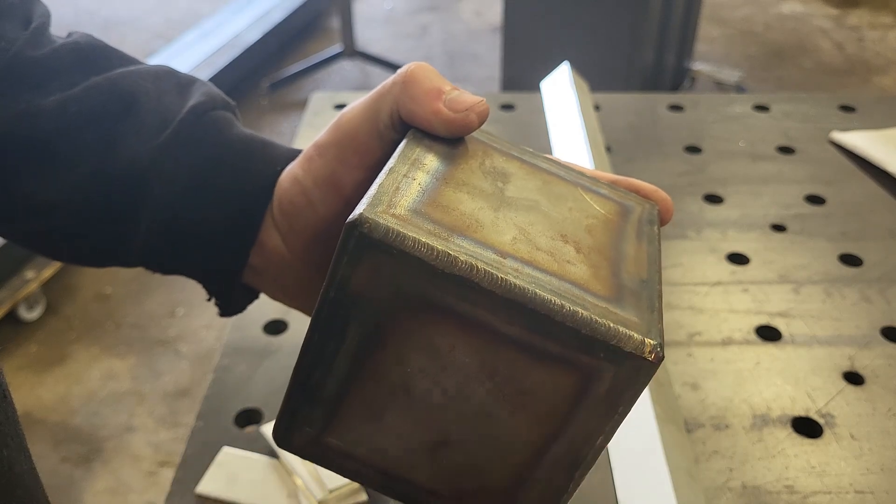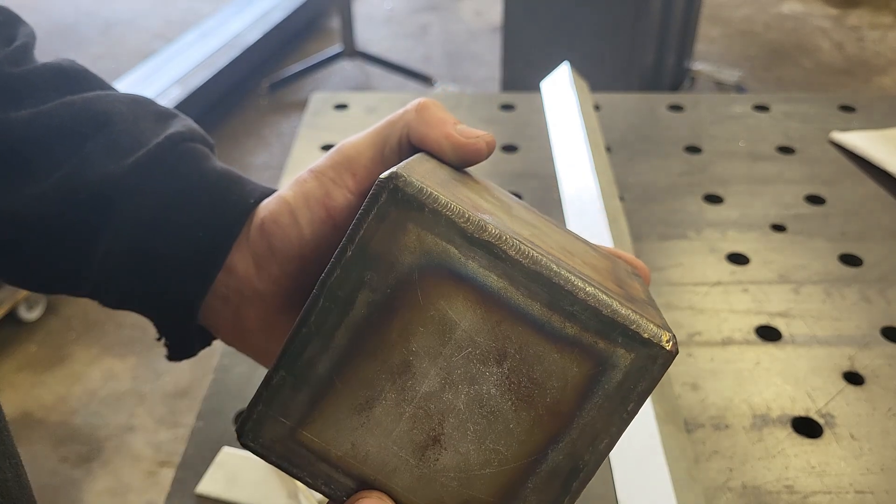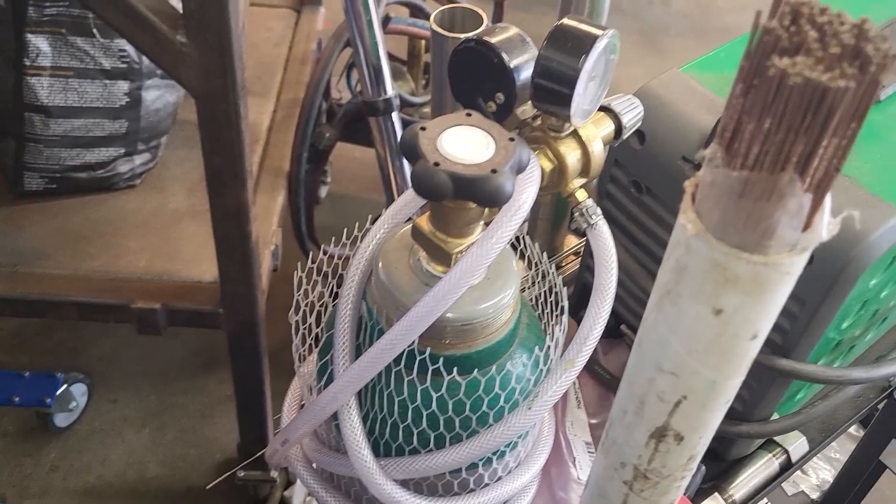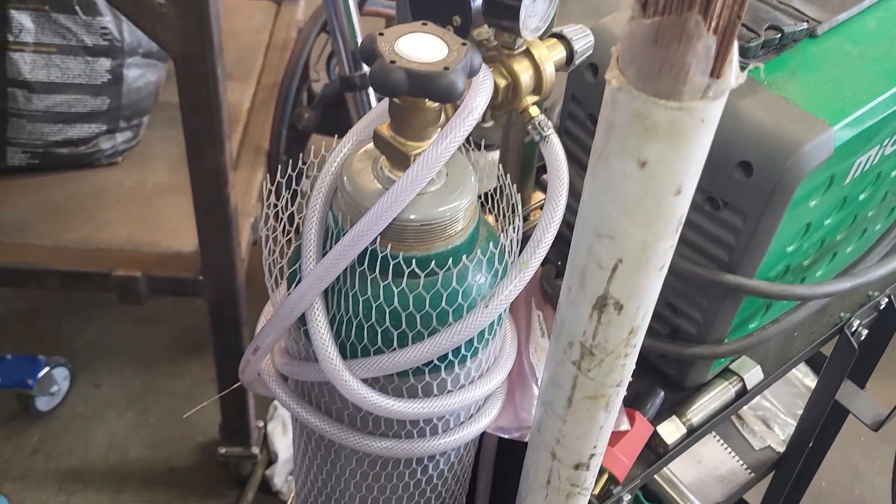When oxygen enters the weld pool, it can create tiny bubbles inside of the steel that can weaken a weld joint and result in mechanical failure. Therefore, a shielding gas is used called argon.